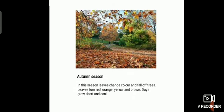The autumn season. In this season leaves change color and fall off trees. Leaves turn red, orange, yellow or brown. Days grow short and cool.